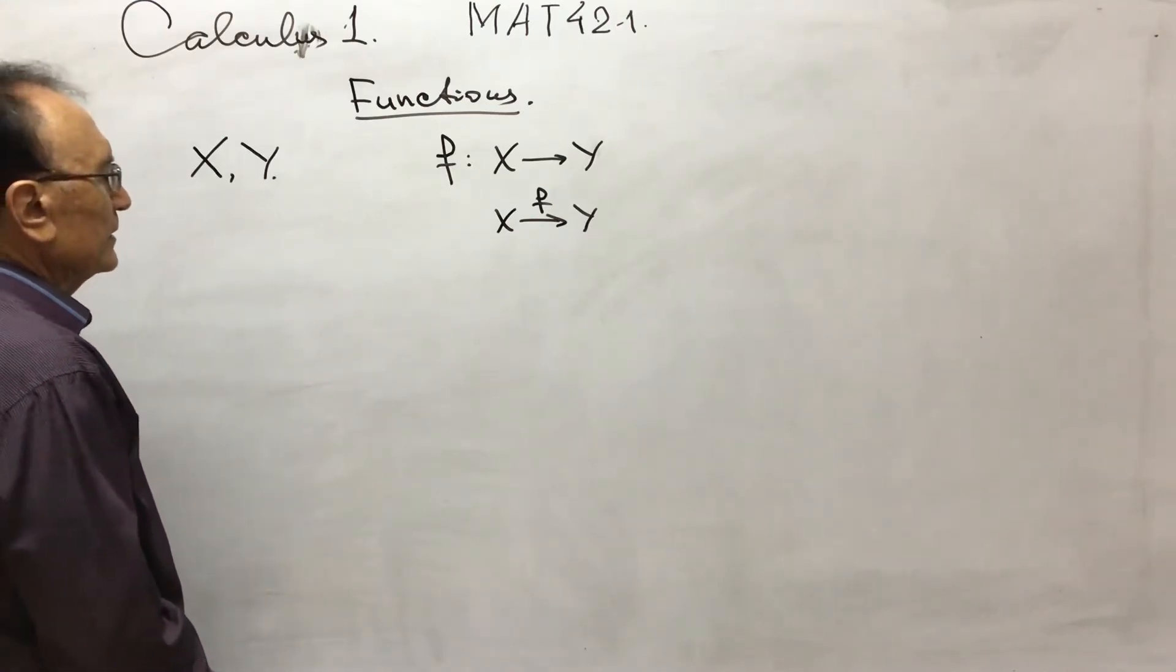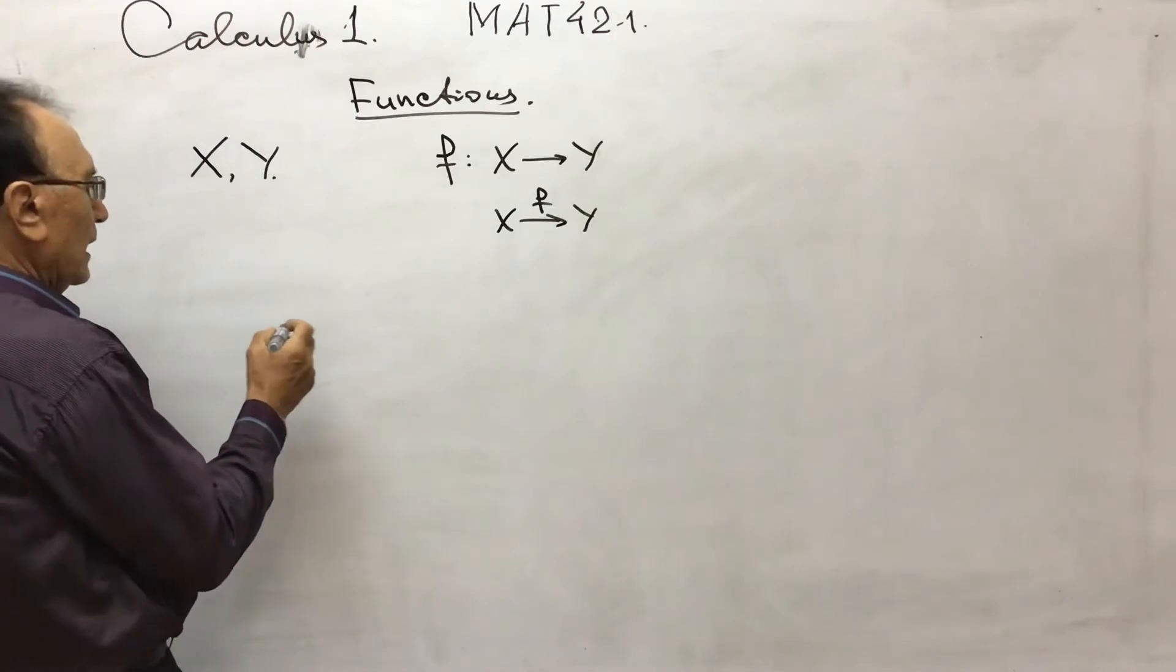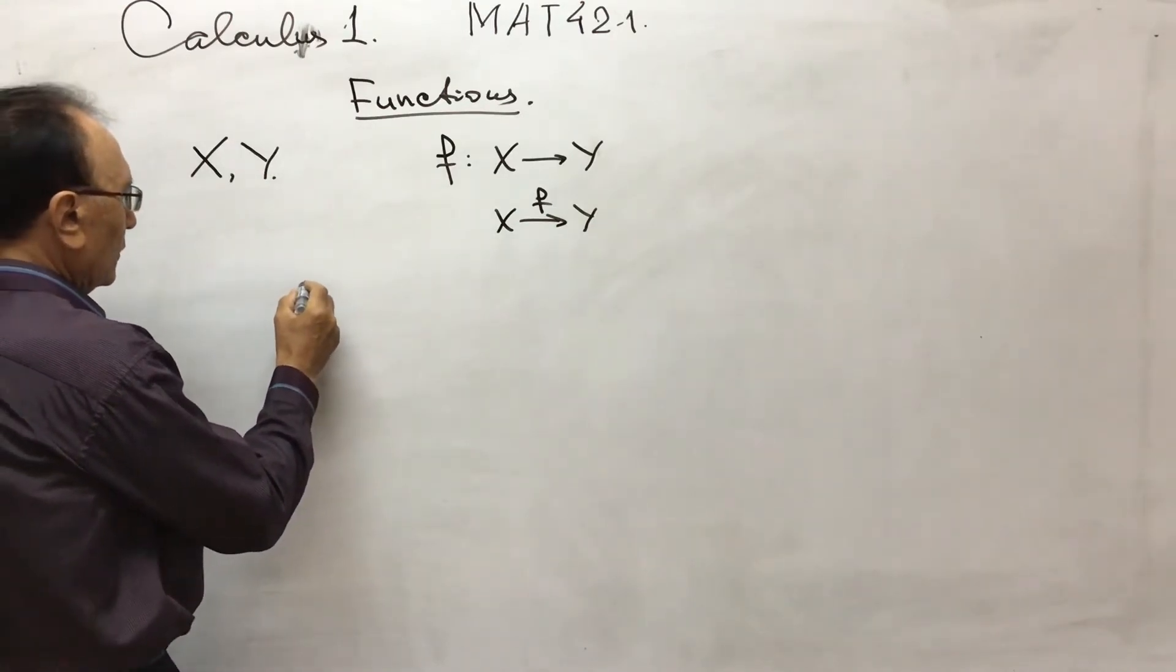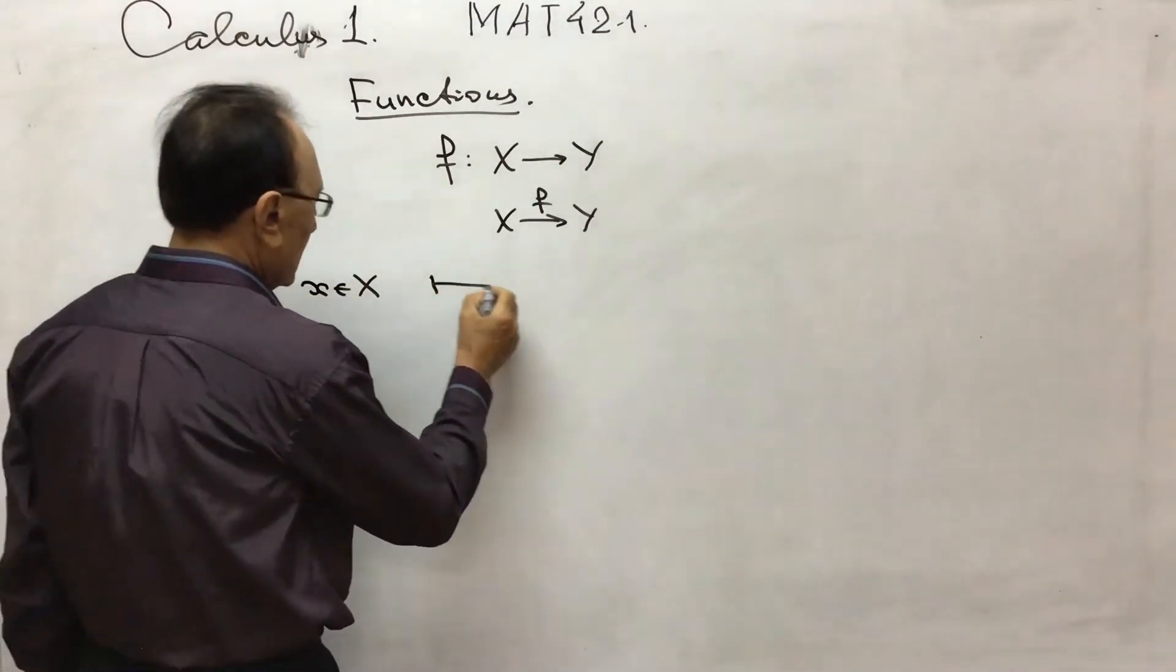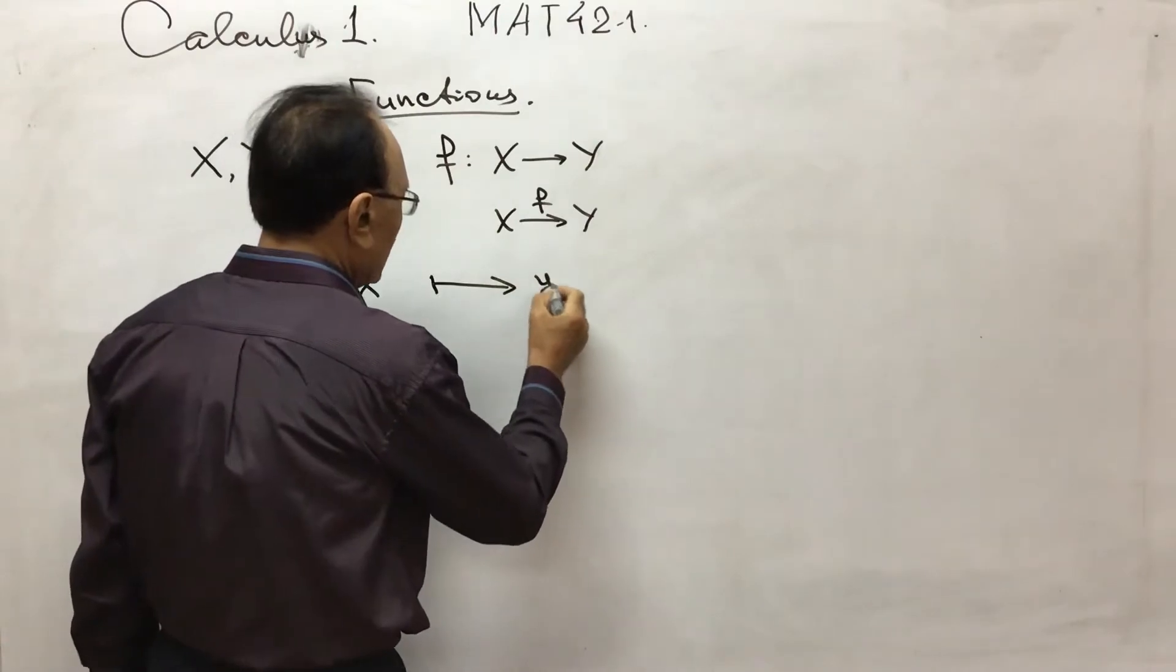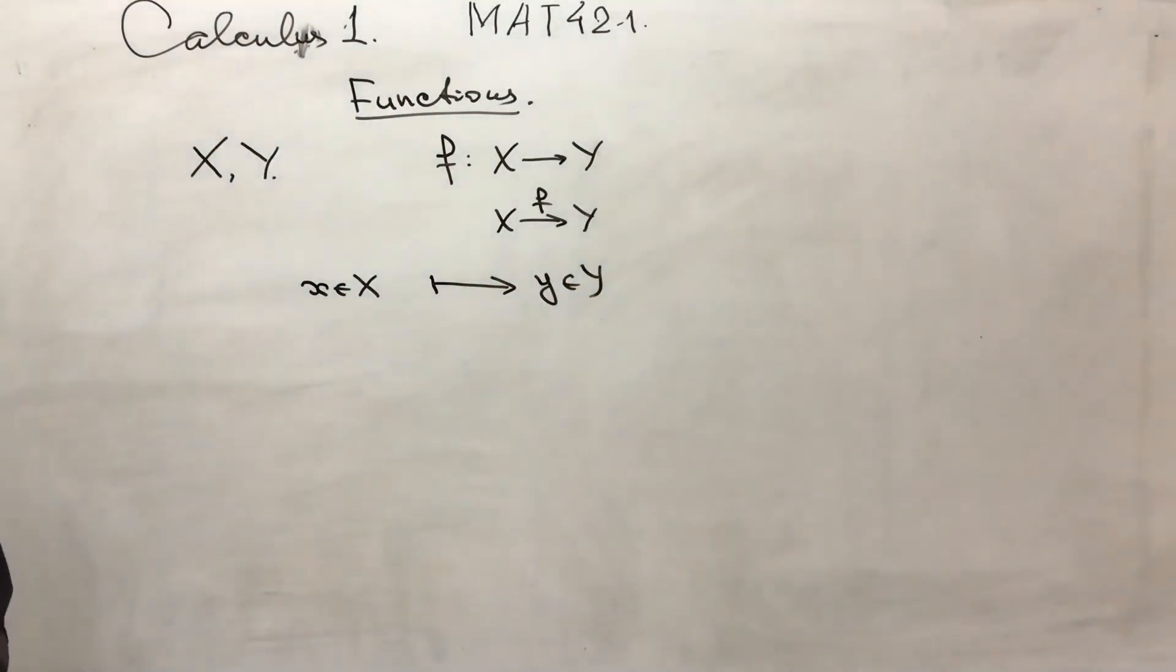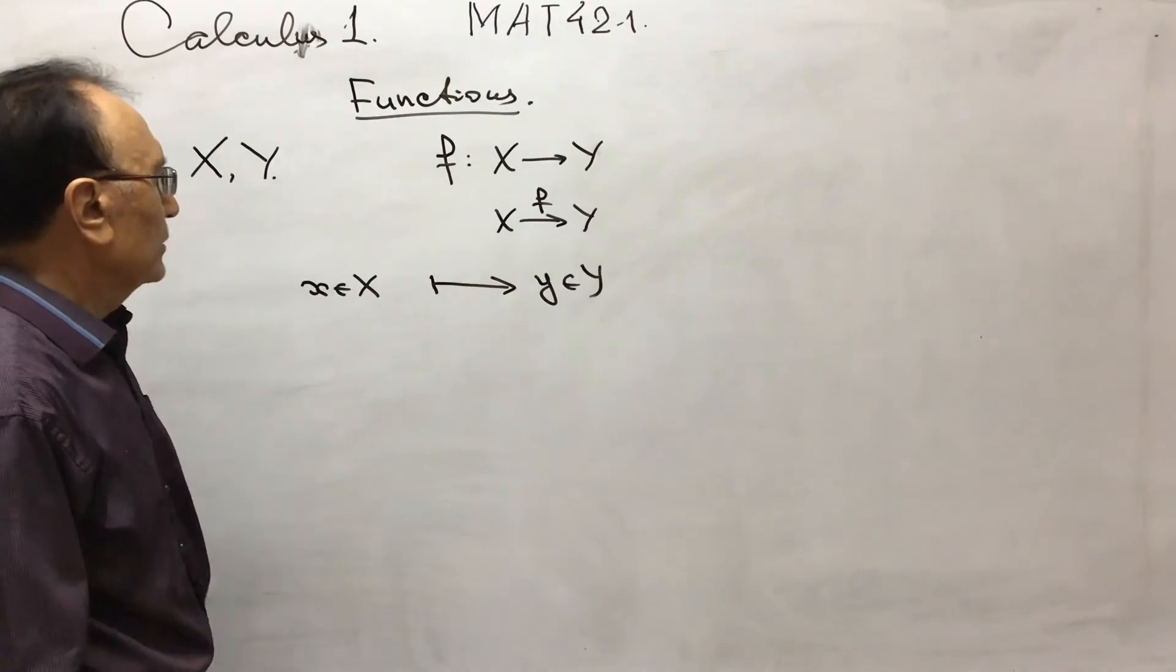A relation is a function if this relation assigns for an element of x, a unique element of y. So this is a function relation. We will call it function relation. So this is a notation for function relation.